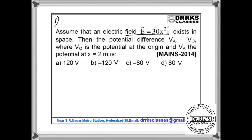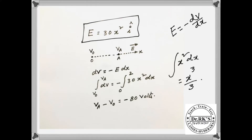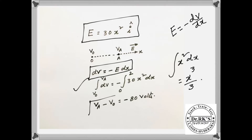Here i-cap is the unit vector along the x-axis. You have to find the potential difference between two points: V₀ is the potential at the origin, and Va is the potential at x equals 2 meters. We know that electric field is the negative gradient of potential, so the potential difference dV equals minus E·dx. Integrating both sides and substituting E equals 30x², we get Va minus V₀ equals minus 80 volts, since the integral of x² dx is x³ by 3. Substitute the limits to get the potential difference.